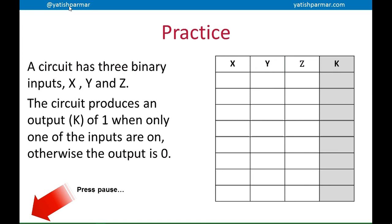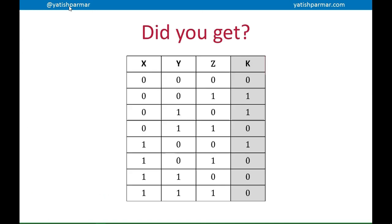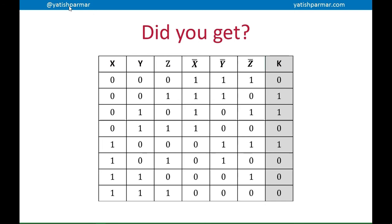And I'm hoping that you have just come back after pressing pause. So you should have got a truth table that looks something like this. So we've got three possible instances where K will give you 1. If I expand my truth table, it looks something like that. And remember now, I'm only interested in the instances where K is 1. Once I've identified those instances...